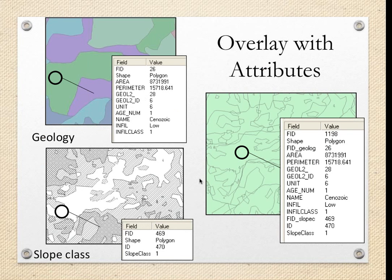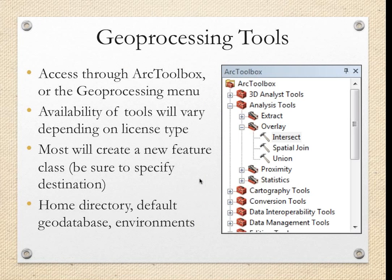Both overlays and spatial joins are methods for combining information between GIS layers. The major difference is that a spatial join doesn't alter the original geography — it simply joins the attribute tables of two layers together based on their common spatial location. Overlay feature classes are a combination of multiple feature classes. For example, we might have a geology feature class and a land ownership feature class, and the result of overlaying them is a new combined layer.